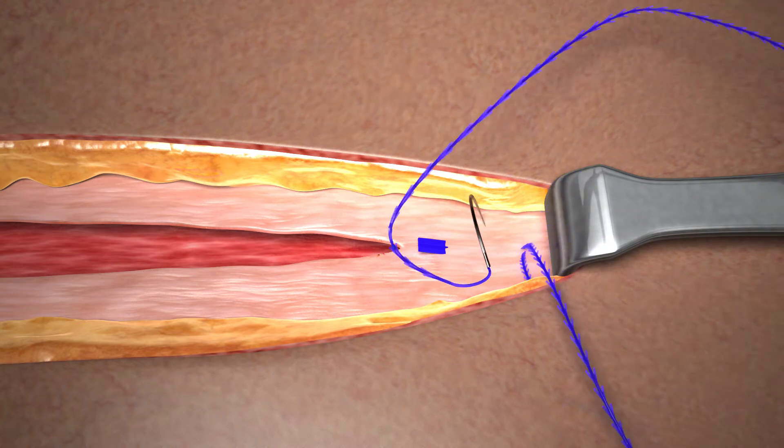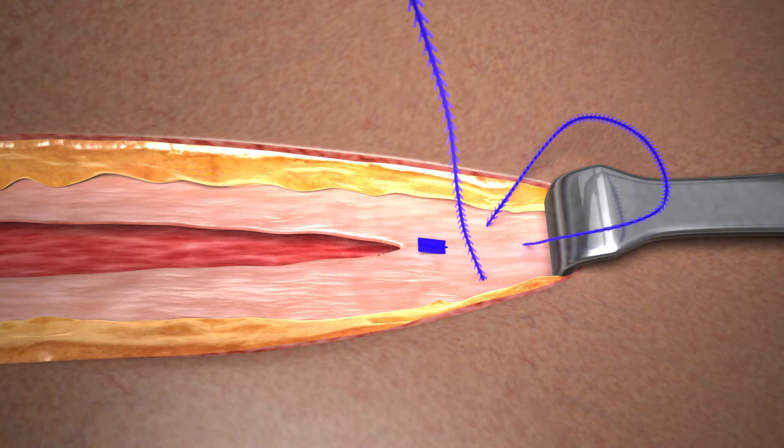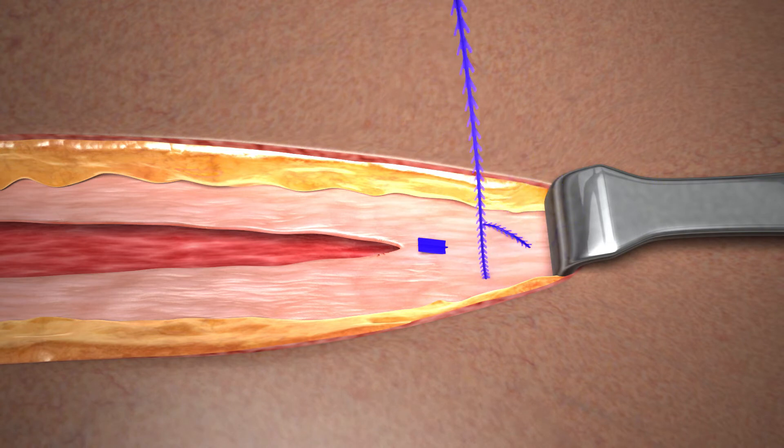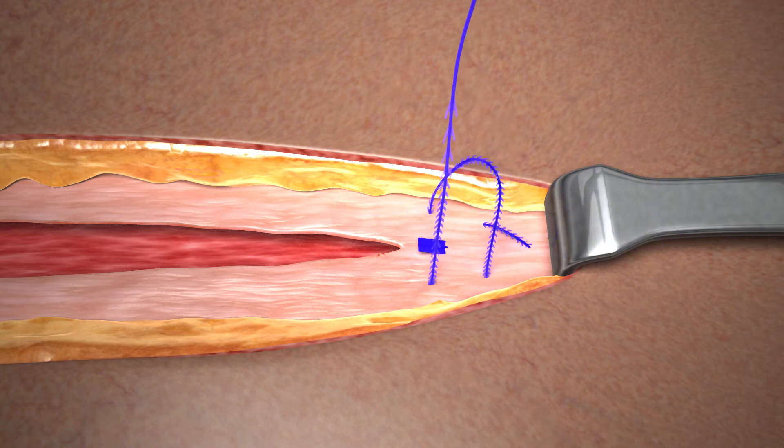Moving toward the apex of the incision take a pass in the intact tissue perpendicular to the initial pass to lock the stitch. Multiple passes are acceptable. Gently pull on the device to take up any slack.